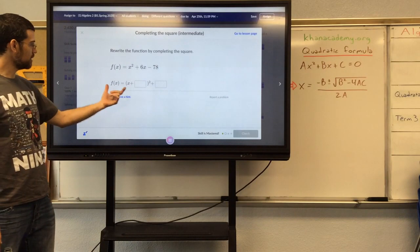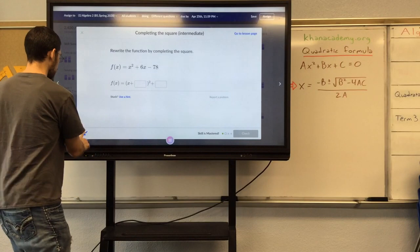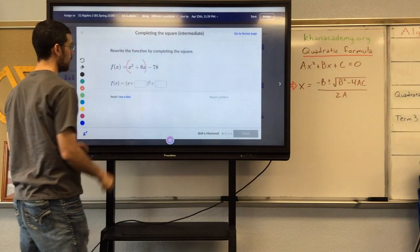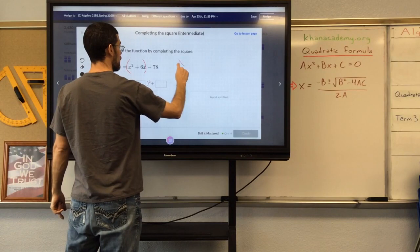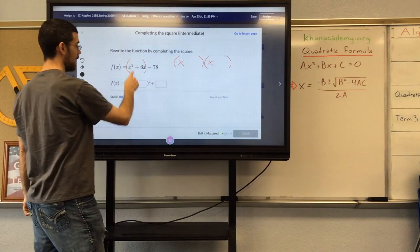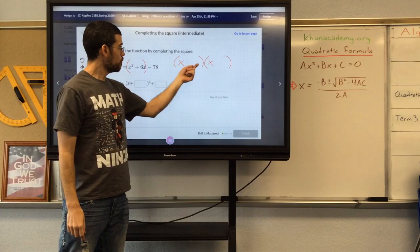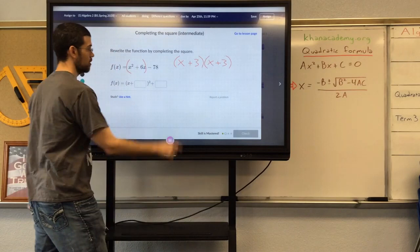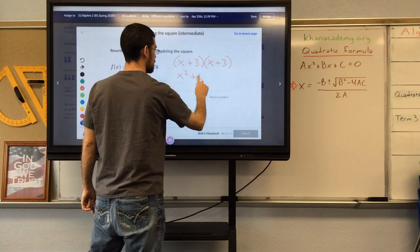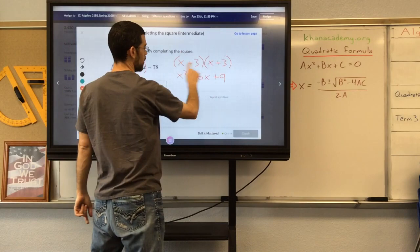Next problem, rewrite this function as f of x equals a binomial squared plus a constant. So once again, we're going to group the x's and make a perfect square trinomial out of them. We get x times x makes x squared. We have to have half of 6 be our constant. So plus 3, plus 3.